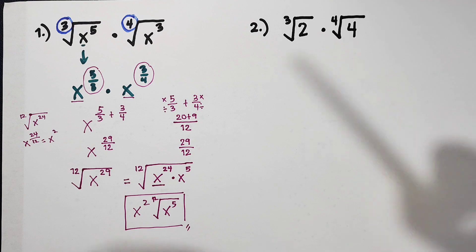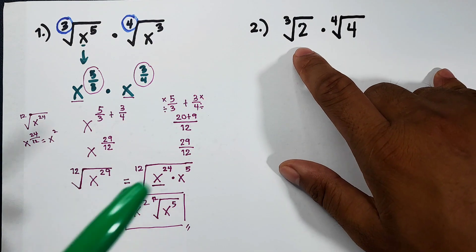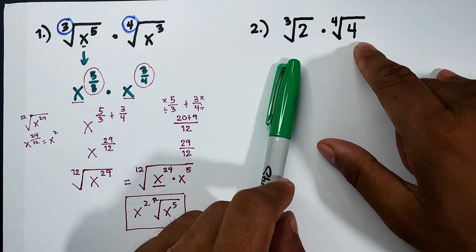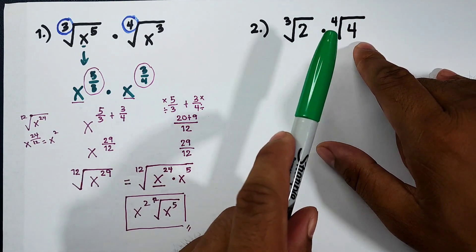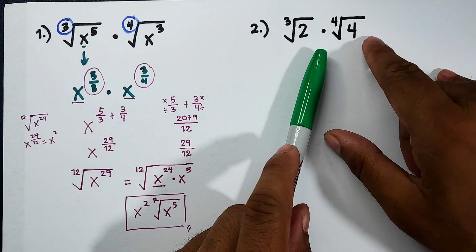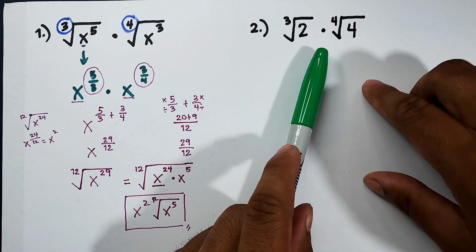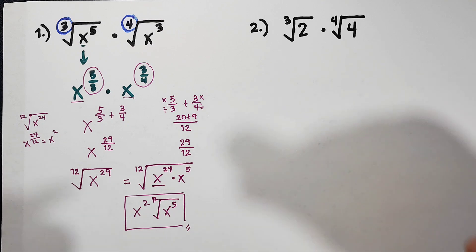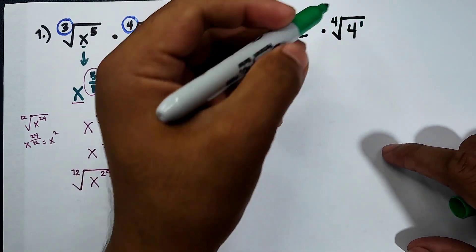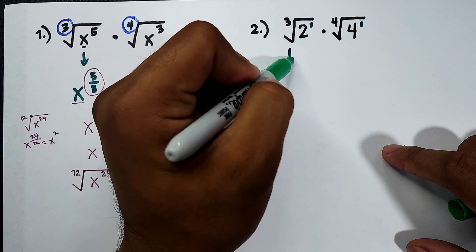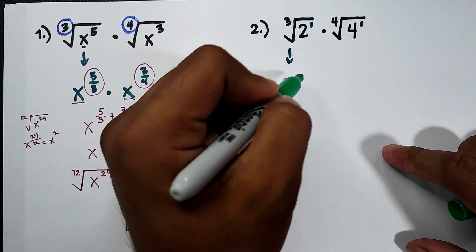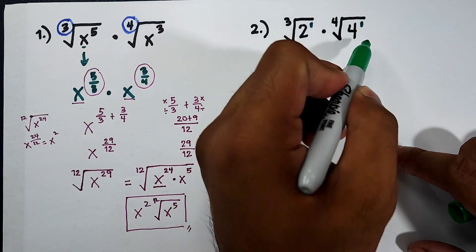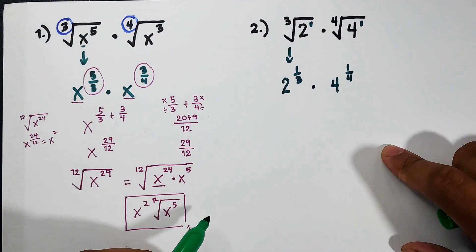Now let's continue with number 2. Here we have the cube root of 2 times the 4th root of 4. We know that 2 is not a perfect cube and 4 is not a perfect 4th root, so it cannot be simplified directly. Same process — we convert these. They have an invisible exponent of 1, so when converted, it will become 2 raised to 1/3 times 4 raised to 1 over 4.